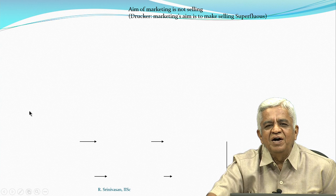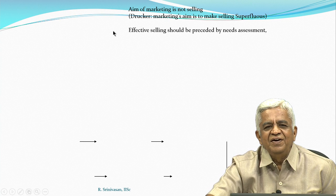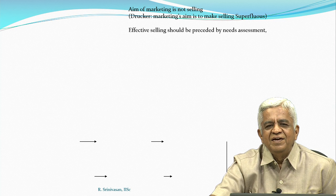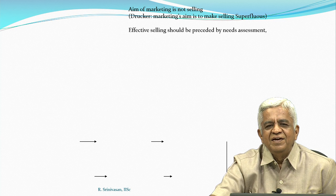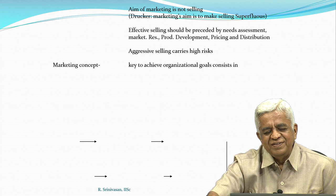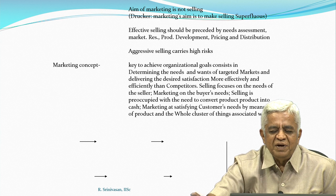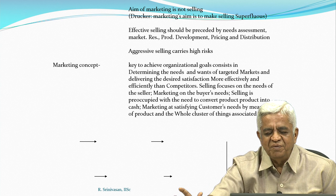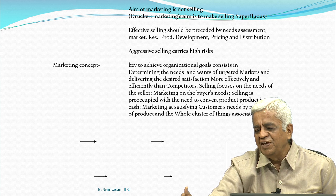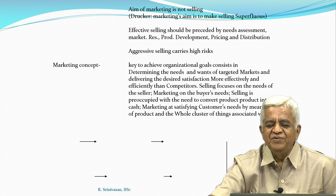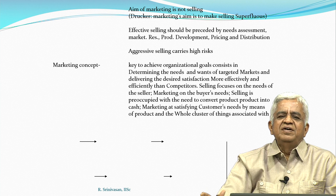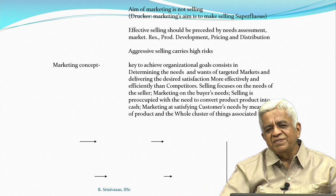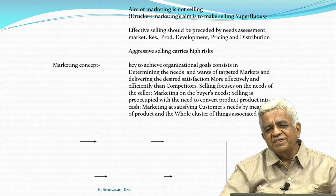But this is not the method of marketing you should really be doing. The aim of marketing is not selling. Drucker says the marketing aim should be to make selling superfluous — that effective selling should be preceded by needs assessment, market research, product development, pricing and distribution. In other words, you should not be selling a product just because you have manufactured it, even if it does not satisfy the needs of the consumer. You should assess his needs first.